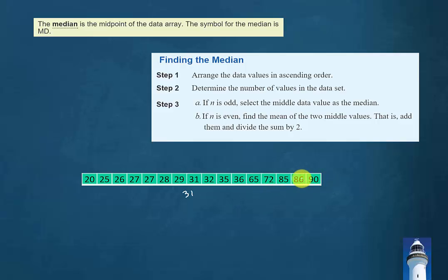Then we count eight from the top: one, two, three, four, five, six, seven, eight, and we find this value 32.